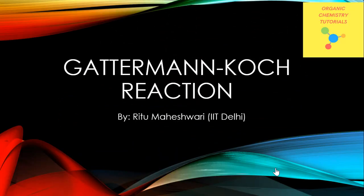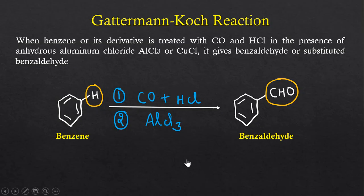Hello friends, welcome to organic chemistry tutorials. Today I will teach you the Gattermann-Koch reaction. Let's begin. In this reaction, benzene or its derivative is treated with carbon monoxide and HCl in the presence of anhydrous aluminum chloride, and it will give benzaldehyde or its substituted benzaldehyde.